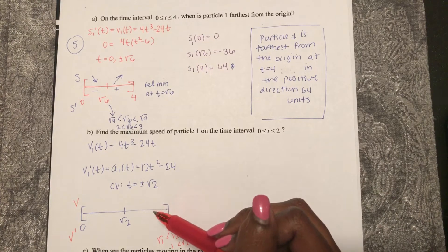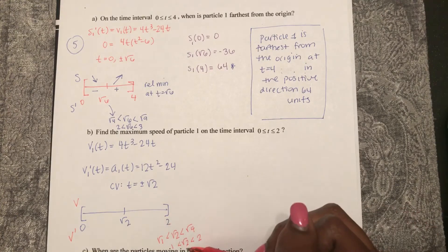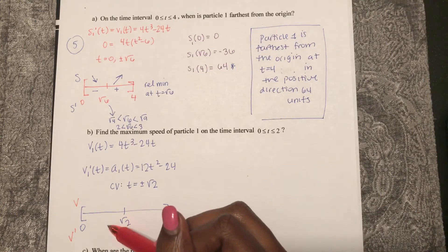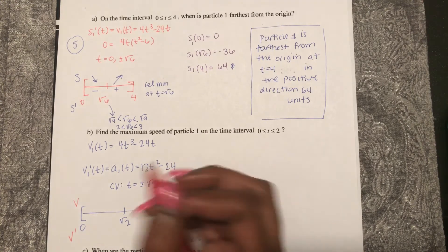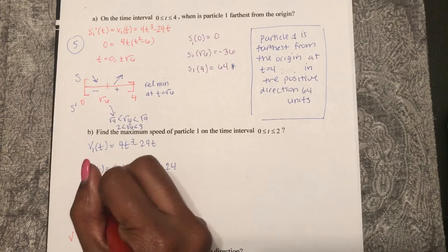If I plug in a number less than square root of two, I could plug in one. If I plug in one in here, I get a negative, decreasing.